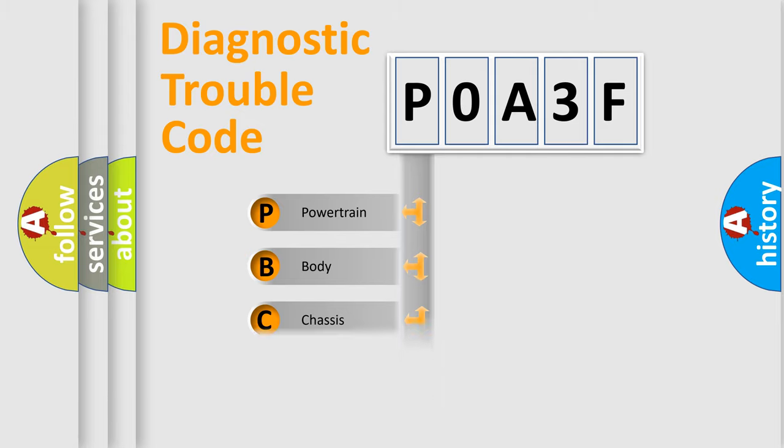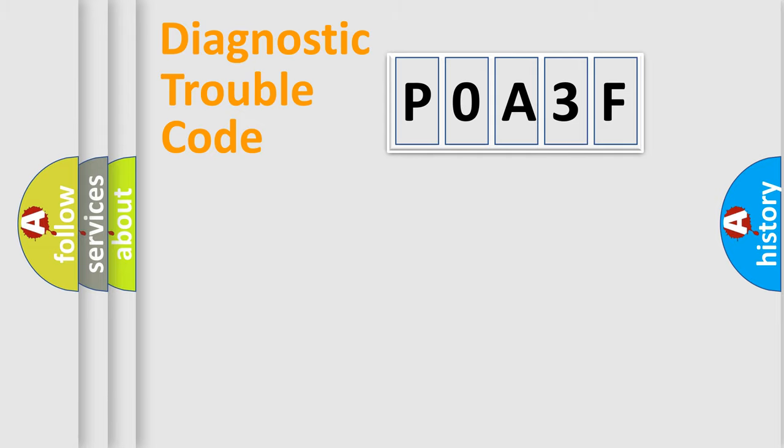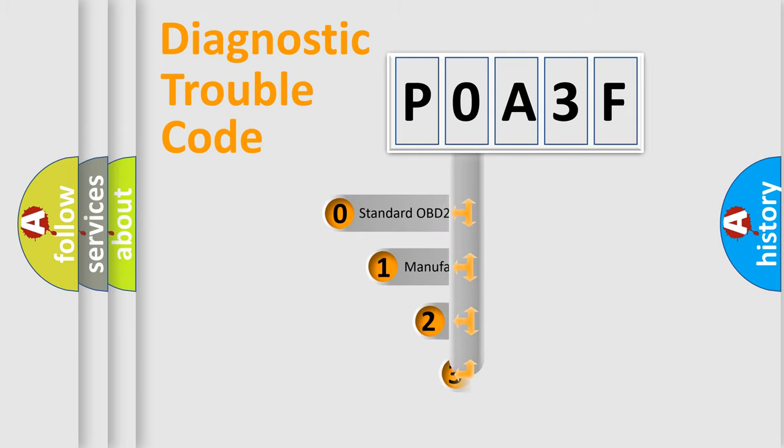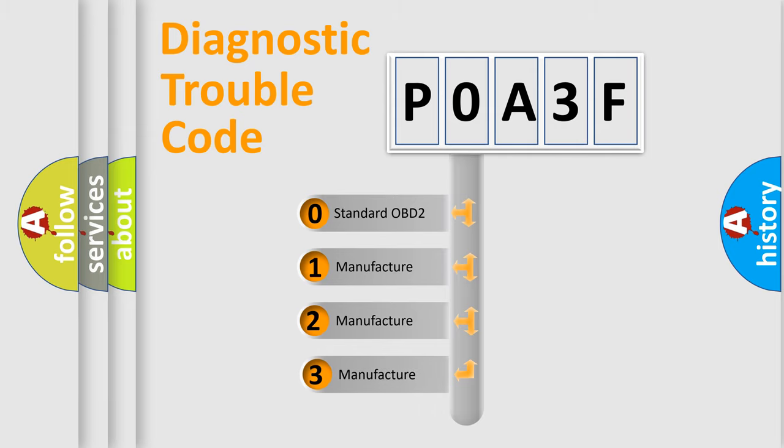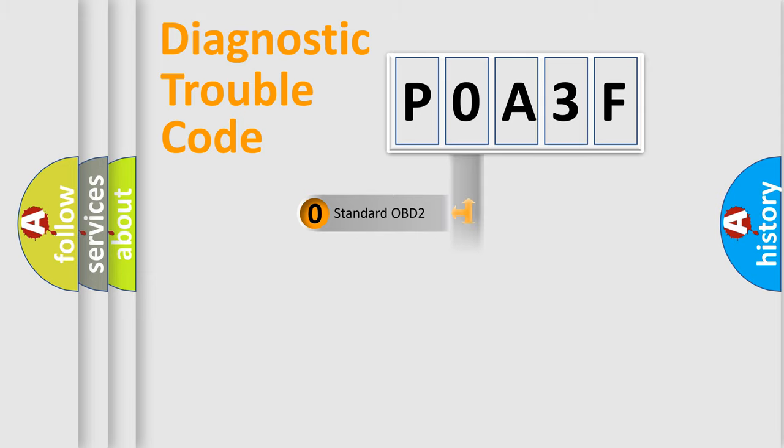Powertrain, Body, Chassis, Network. This distribution is defined in the first character code. If the second character is expressed as zero, it is a standardized error. In the case of numbers 1, 2, 3, it is a manufacturer-specific expression of the car-specific error.